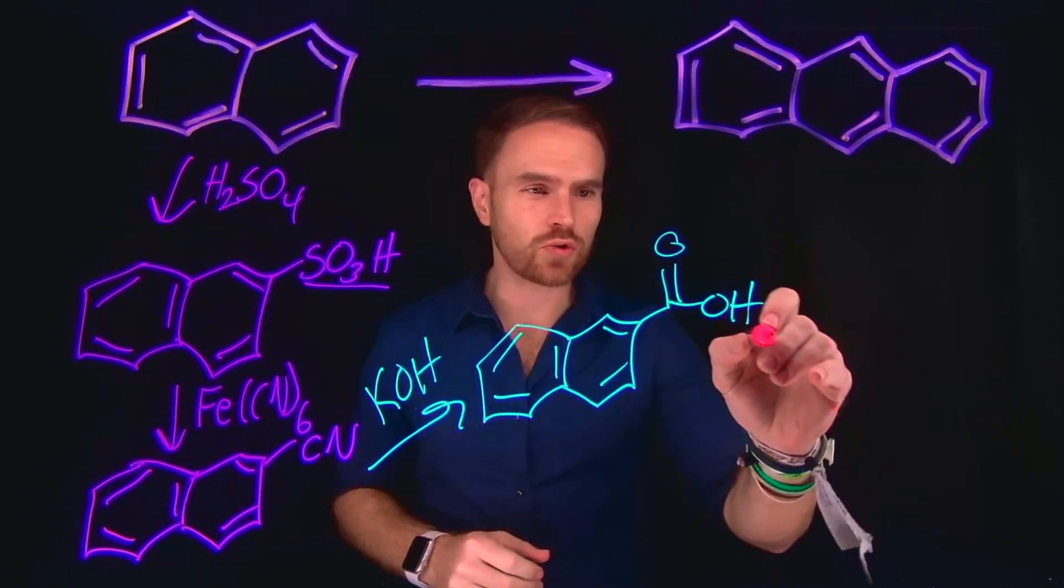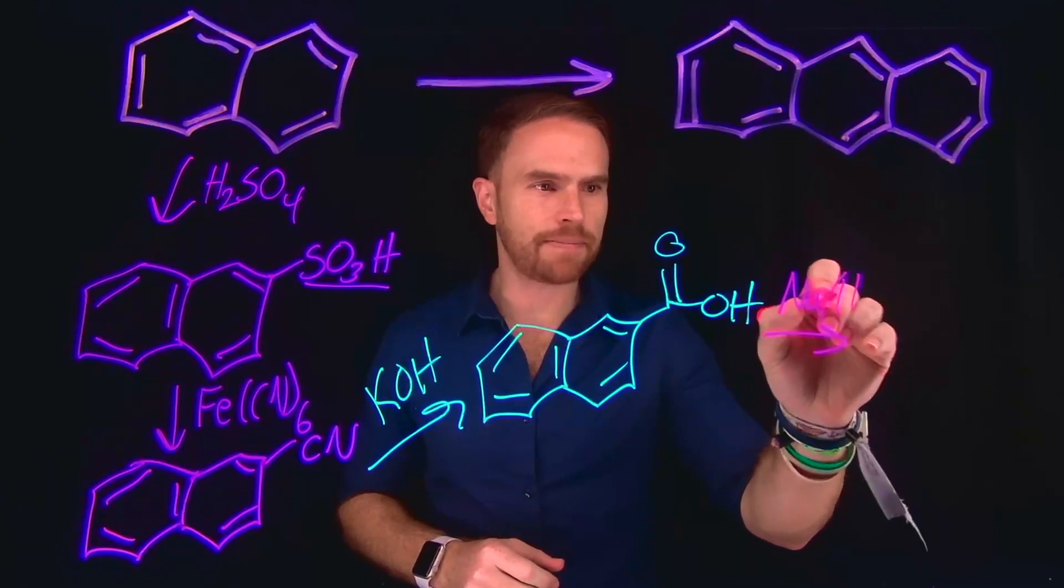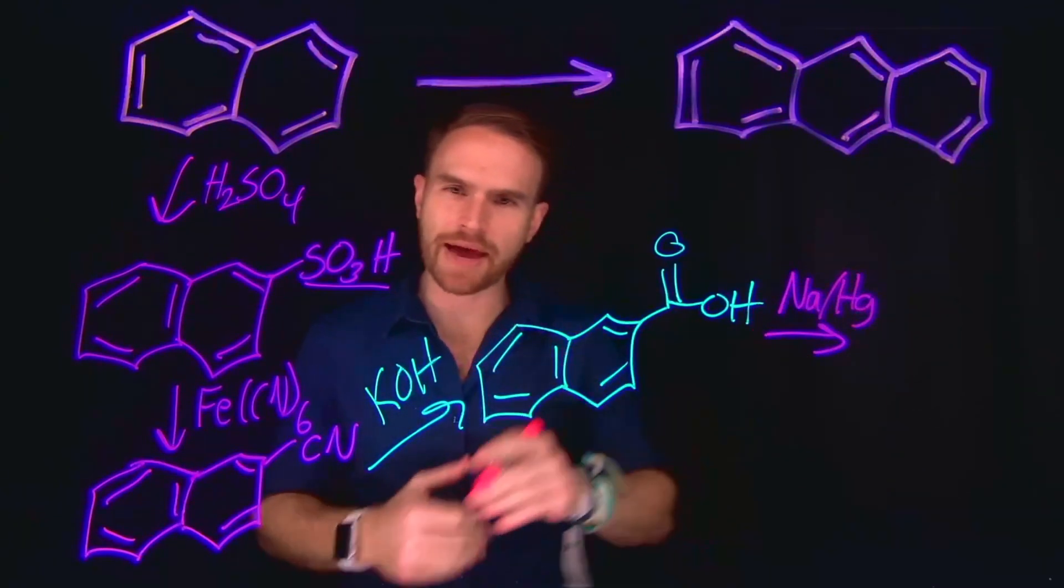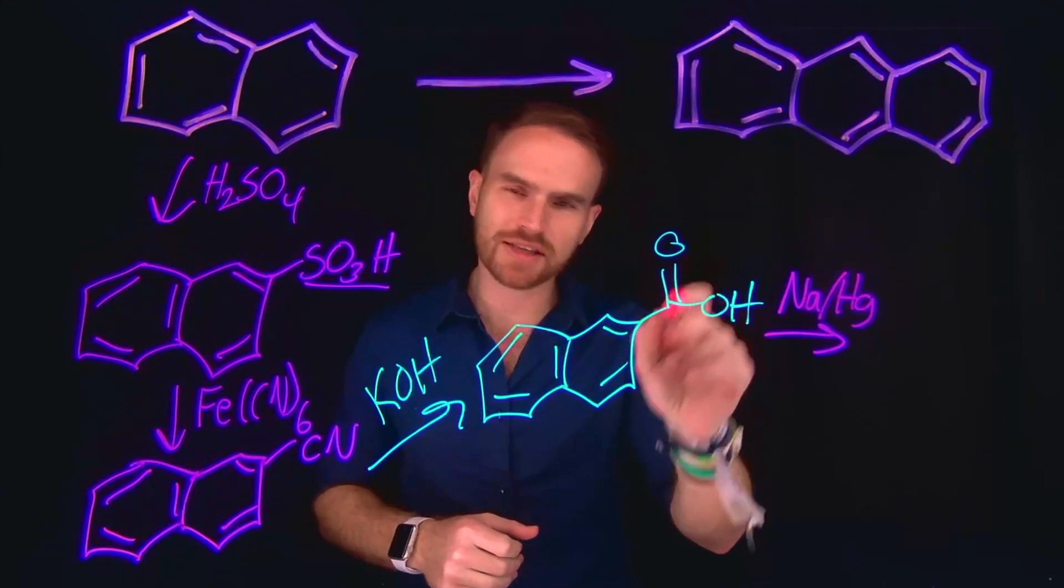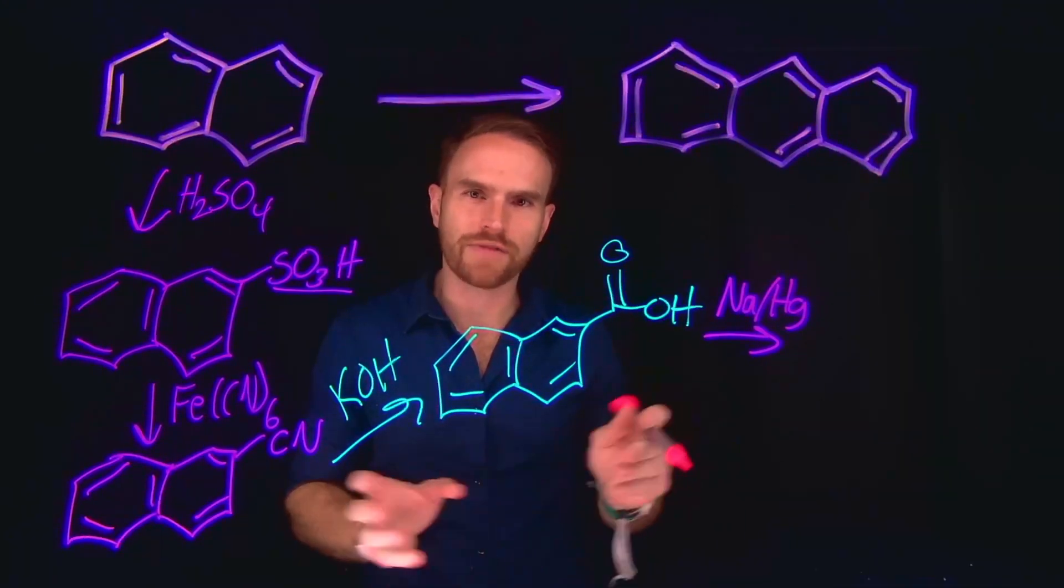From here, we can do what's called a Birch reduction, which is when we use sodium and mercury to reduce this aromatic species. Now importantly, carboxylic acid is going to be an electron withdrawing group, which is going to lead our reduction to occur in a very specific place.